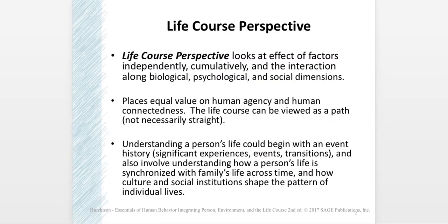The life course perspective looks at the effect of factors independently, cumulatively, and also the interactions along biological, psychological, and social dimensions — the biopsychosocial perspective. I would add that it includes spiritual dimensions as well; I think it's a bit of an oversight that that's not included in this chapter. This perspective places value on human agency — the ability of a human being to take action to change his or her life course — and also human connectedness, how generations connect together and impact each other during the course of one's life.